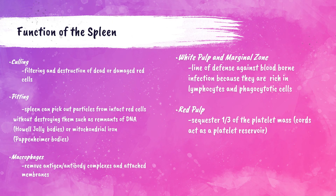Two main functions of the spleen are culling and pitting. Culling is the process of removing red blood cells from circulation when they are damaged, abnormal, or at the end of their lifespan. Pitting refers to when the spleen removes particles from intact red blood cells without destroying them — such as remnants of DNA called Howell-Jolly bodies, or remnants of mitochondrial iron called Pappenheimer bodies, both visible on a peripheral blood smear.